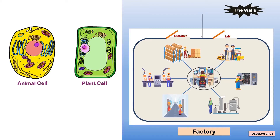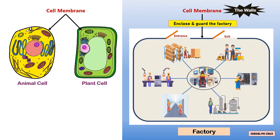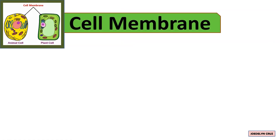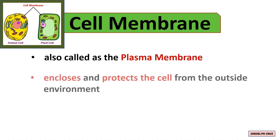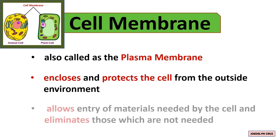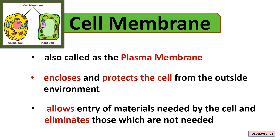The walls of the factory represent the cell membrane. They enclose the factory and control whoever comes in and out. The cell membrane, also called the plasma membrane, encloses and protects the cell from the outside environment. It also allows entry of materials needed by the cell and eliminates those which are not needed.